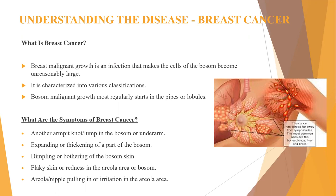Some breast cancer symptoms or signs include: a knob or lump in the breast or underarm, expanding or thickening of a breast part, dimpling or irritation of the breast skin, flaky skin or redness in the areole area, and nipple pulling or irritation in the areole area. Note that all these signs do not actually point towards breast cancer — they can be due to other reasons as well.